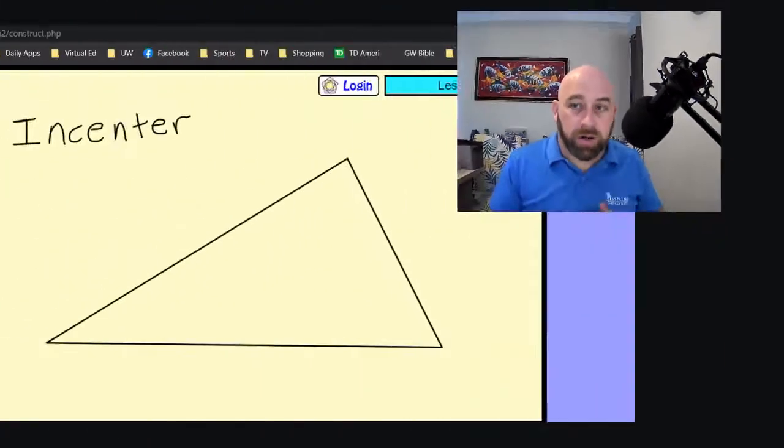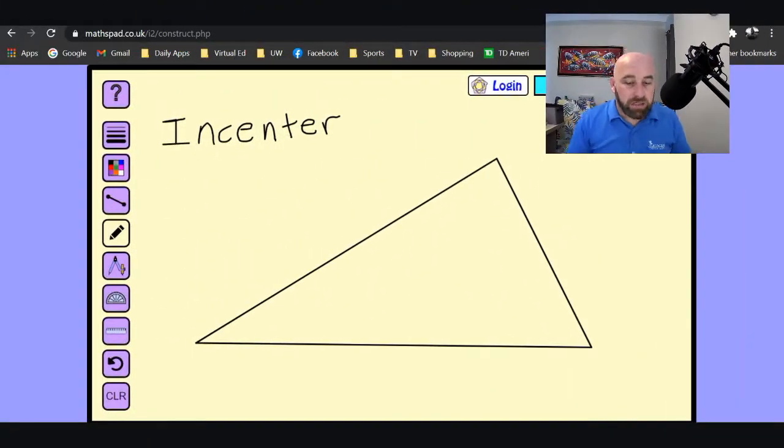Welcome back to another geometry class. Today we are going to continue talking about constructions. Last class we discussed circumscribing a circle about a triangle. Today we are going to talk about inscribing it inside of the triangle. So if you look down here, I have a triangle and what we want to do is put a circle inside of that triangle. We want to inscribe it inside. I wrote down the word incenter. We need to find the incenter of this triangle. How do we do that? Well, go back to page 111.